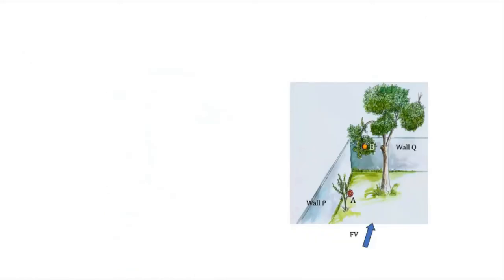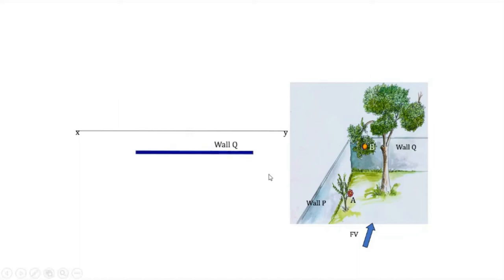Based on this setup, first we draw an XY line. The XY line separates the front view and the top view. In this case, we consider the XY line to be the ground line itself. This is wall Q — you don't have to draw it as a thick line; any line will do. It is a straight line representing wall Q. We are not considering the thickness of the wall.